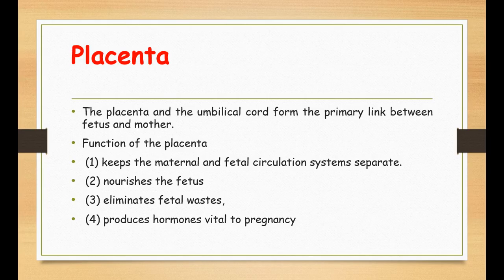The placenta is a disc-shaped organ which provides the sole physical link between the mother and the fetus. During pregnancy, it grows to provide an even larger surface area to allow maternal-fetal exchange of substances. The placenta provides oxygen and nutrients to the fetus, eliminates waste products including CO2, metabolizes substances and releases metabolic products into either the maternal or fetal circulation, and produces hormones that are vital to normal pregnancy.